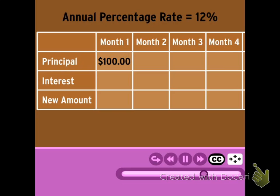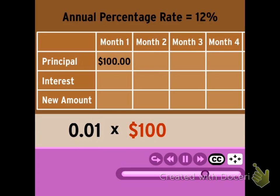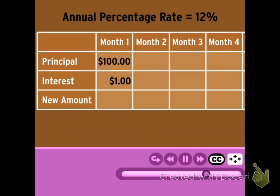Let's start filling out that chart. We know that 1% of $100 is $1. So after the first month, I'd have $101. The difference with compound interest is that for the next month, you have to calculate 1% of $101, not just 1% of $100 even.